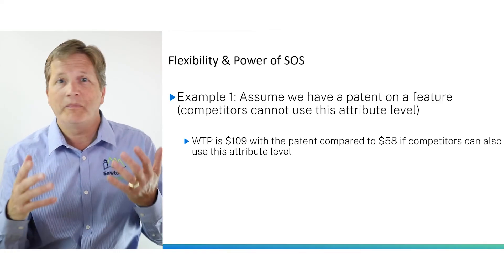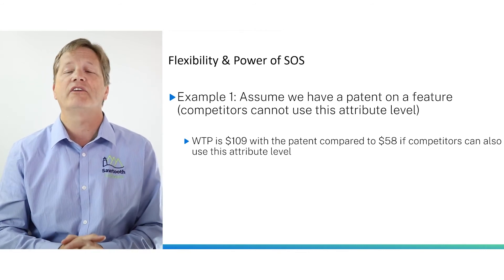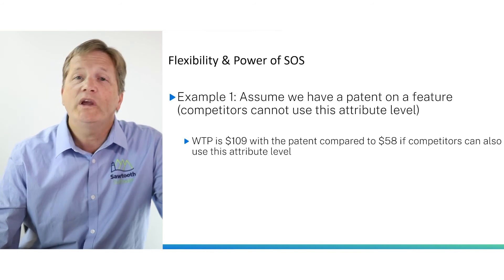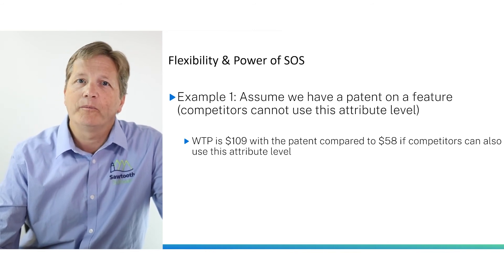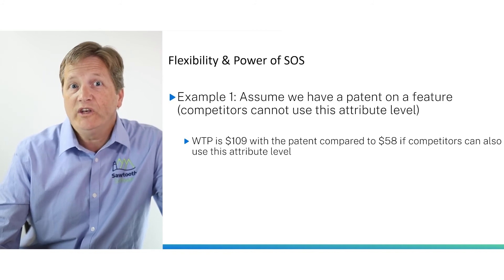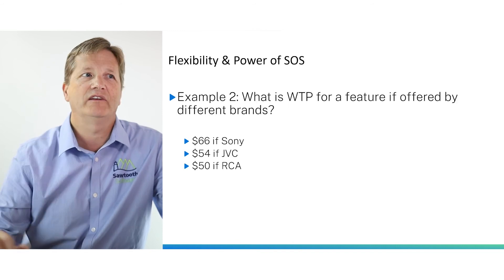As an example of the flexibility and power of sampling of scenarios, you can say we have a patent on this feature and competitors cannot take it. When we estimate willingness to pay for this particular data set assuming a patent on a particular level, we get $109. But if we allow competitors to take on this potential level and we don't have a patent, then the estimate of willingness to pay is just $58.